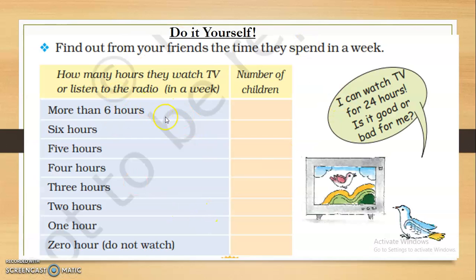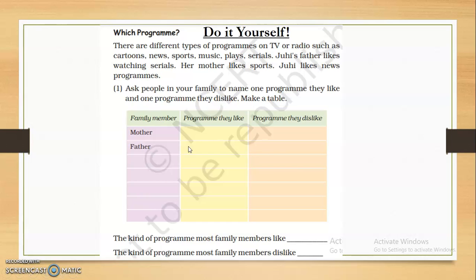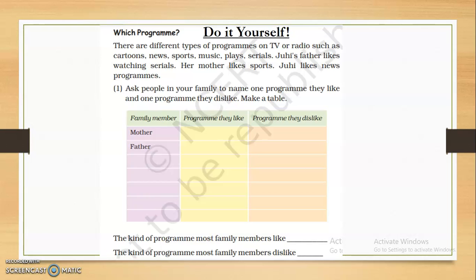This is again a do-it-yourself activity. We had taken this data in the classroom. This is again a practice — if you want, you can do it amongst your friends. In your family, a lot of people have different types of choices. Maybe someone likes news, someone likes to watch sports, someone likes cartoons, and someone likes to watch daily soaps. You can take this data in your family and note it down.